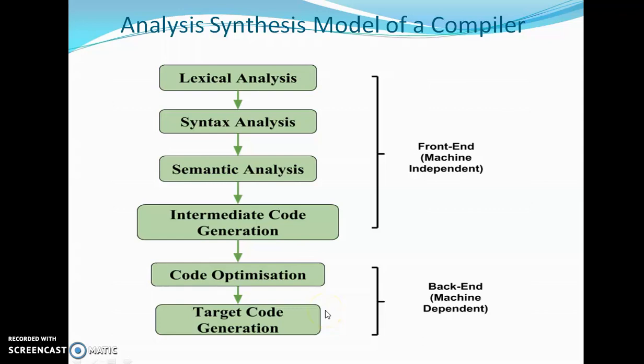The analysis phase is known as the front end of the compiler. It reads the source program, divides it into parts, and checks for lexical, grammar, and syntax errors. It also generates an intermediate representation of the source program. The synthesis phase is known as the back end — it generates the target program using the intermediate source code representation. In the analysis-synthesis model, the front end translates a source program into machine-independent intermediate code, and the back end uses this intermediate code to generate target code that can be understood by the machine.